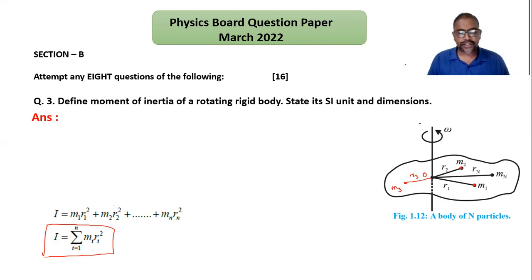How we write this definition: I stands for moment of inertia. The moment of inertia of a rigid body is defined as...